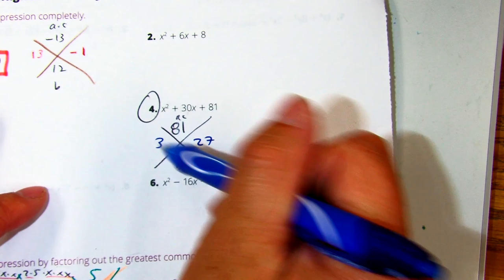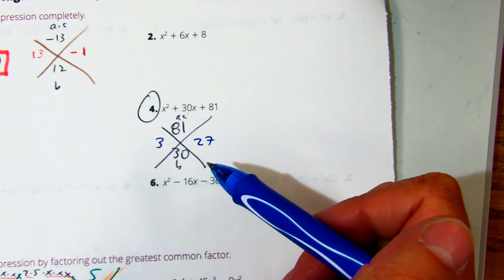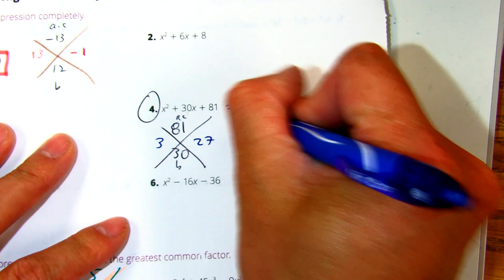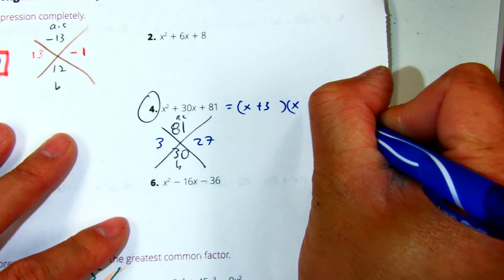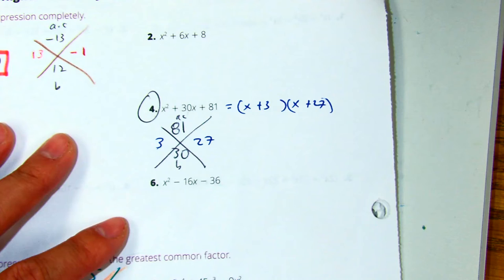Those multiply to be 81, and then those will add to be 30, plus 3, plus 27. And that's our answer.